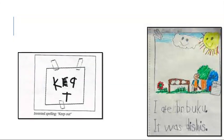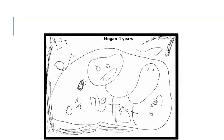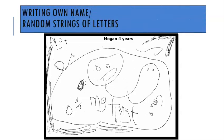How about this one — what stage would you say this child is in? You can see the image to the left has some key letters that read together might represent a word, and in the image to the right, under the drawing, there are some complete words like 'I ate' but some that are not complete. If you said invented spelling, you are correct — that's the stage this child is at. And the next image: if you said writing own name and random strings of letters, you would be correct.